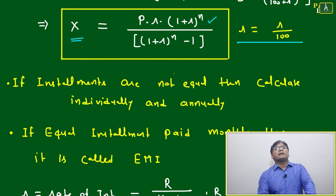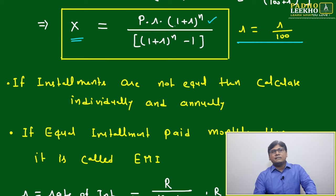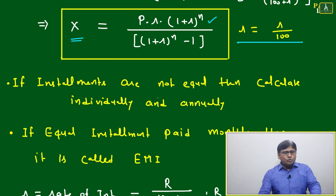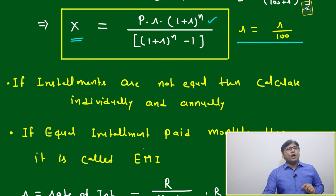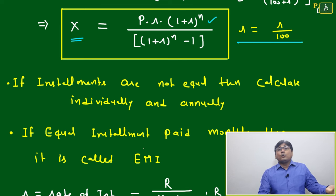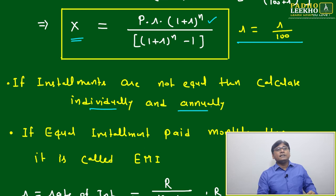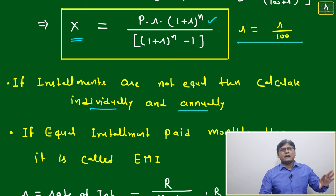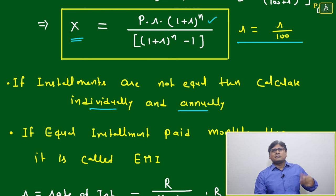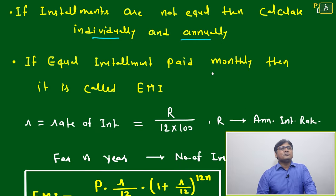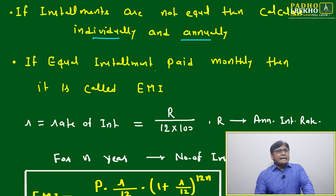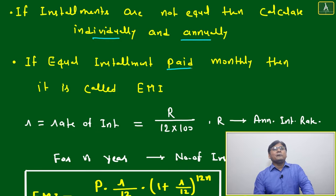Two situations can arise. First: if installments are equal, apply this formula directly. Second: if installments are not equal, calculate individually — but in that case, the number of years will not be more than two or three, otherwise it becomes too difficult to calculate.